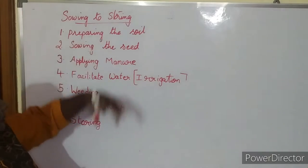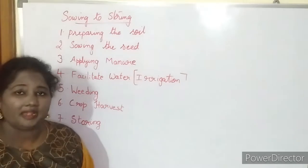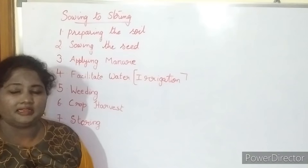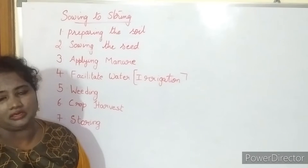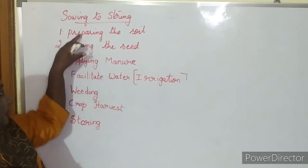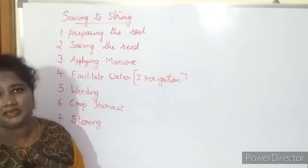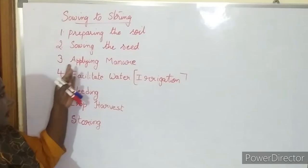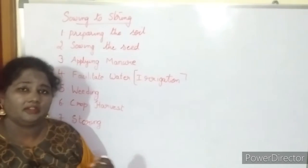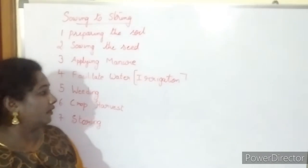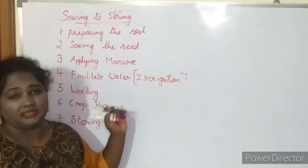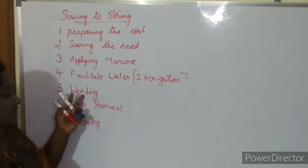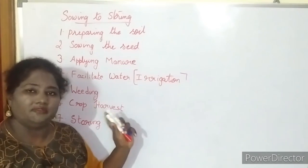Suppose if we go to preparing the soil, the farmer has to prepare the soil before sowing the seeds. He has to check how the soil is, whether to add any manure or not. After preparing the soil, he goes for sowing the seeds. He decides the quality of the seeds and where to get them. After sowing the seeds, the plant or crop grows to some extent, then he applies the required manure. Afterwards, he facilitates water — every time after applying manure he has to give water to the crop. That process is called irrigation.